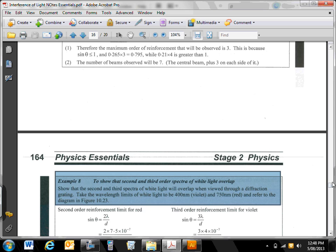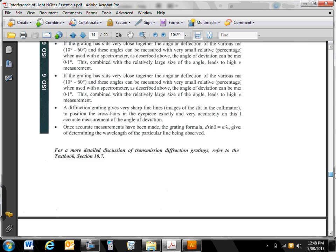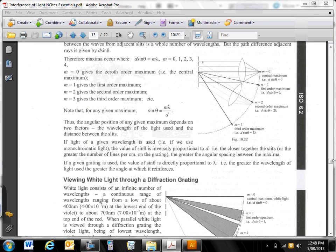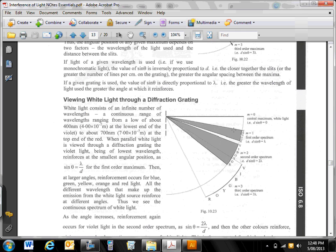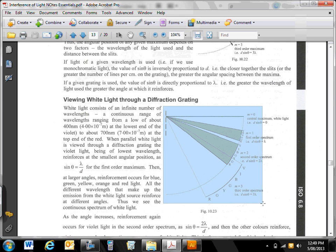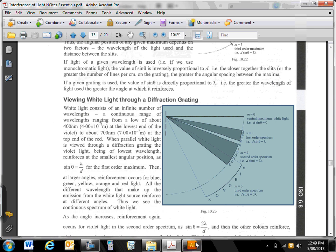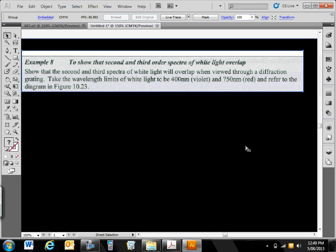If you put white light through a diffraction grating, we're going to see something like this, you'll remember. Here's the first order spectrum. So we'll see all the colors of the rainbow. Second order spectrum. All of the colors of the rainbow. And third order spectrum. And what this is showing here is that this third order overlaps the second order spectra just a little bit.